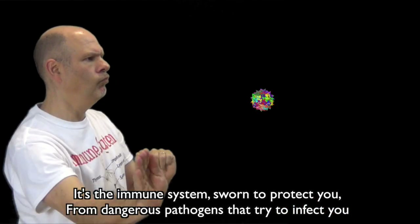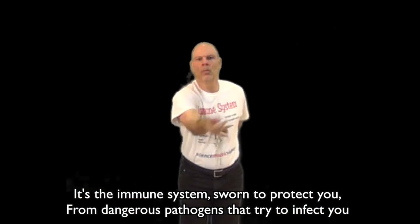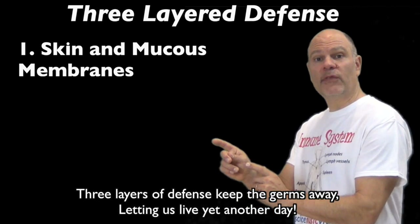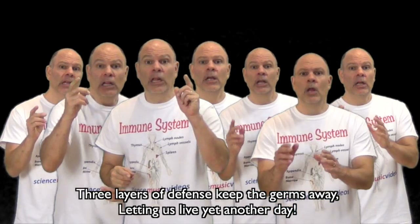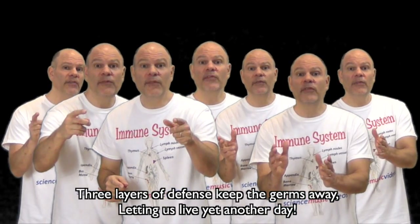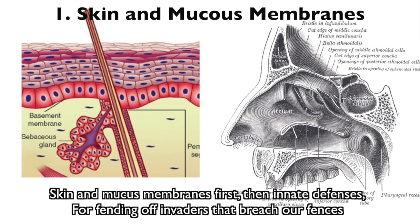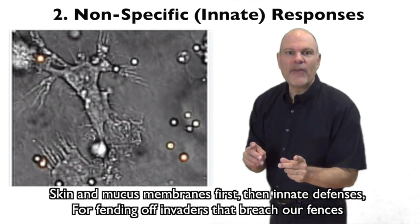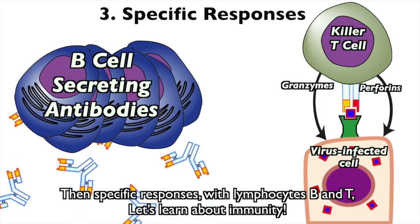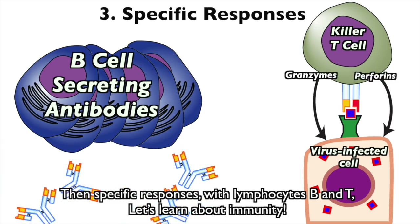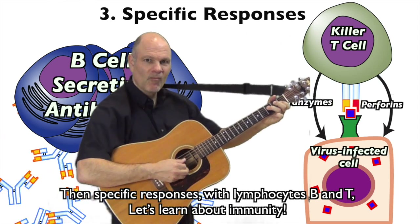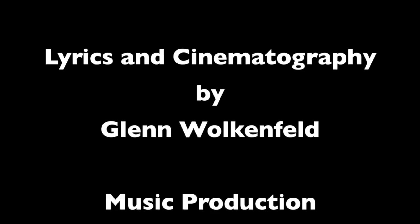It's the immune system, sworn to protect you from dangerous pathogens that try to infect you. Three layers of defense keep the germs away, letting us live yet another day. Skin and mucus membranes first, then innate defenses, fending off invaders that breach our offenses. Then specific responses with lymphocytes B and T — let's learn about immunity.